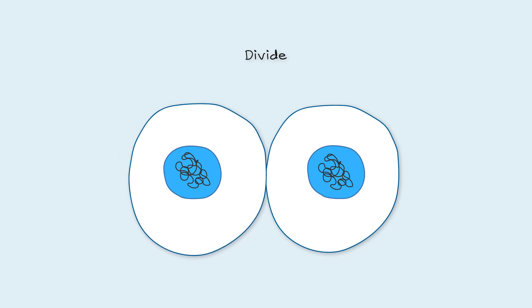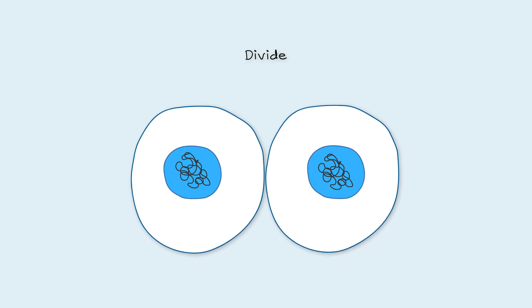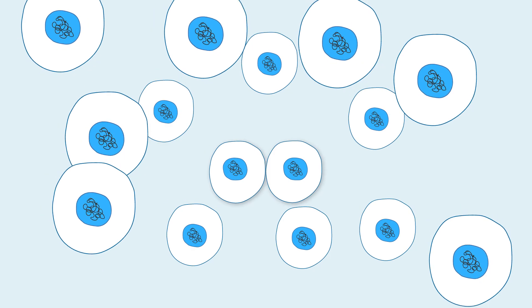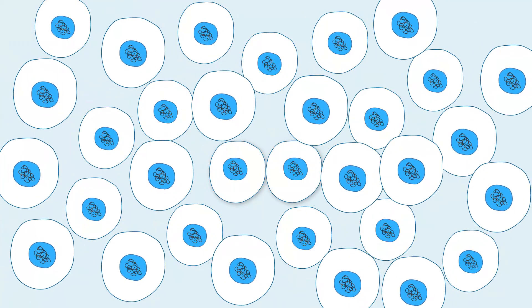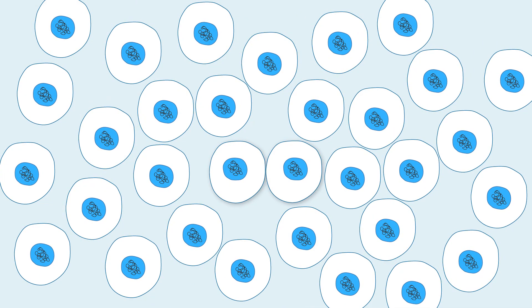In this way, one cell can divide into two, two into four, four into eight, eight into sixteen, and so on, so that cells can be made quite quickly when needed.